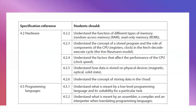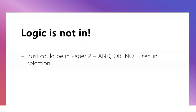Moving on to 4.2 hardware. Understand the difference between RAM and ROM: RAM is random access memory, volatile, used for temporary instructions; ROM is non-volatile, used to store BIOS data. You need to understand the stored program concept, the CPU, the clock, the FDE cycle, the von Neumann model, and input-process-output. Understand factors affecting CPU performance and how data is stored. Logic gates are not in paper one but could appear in paper two.